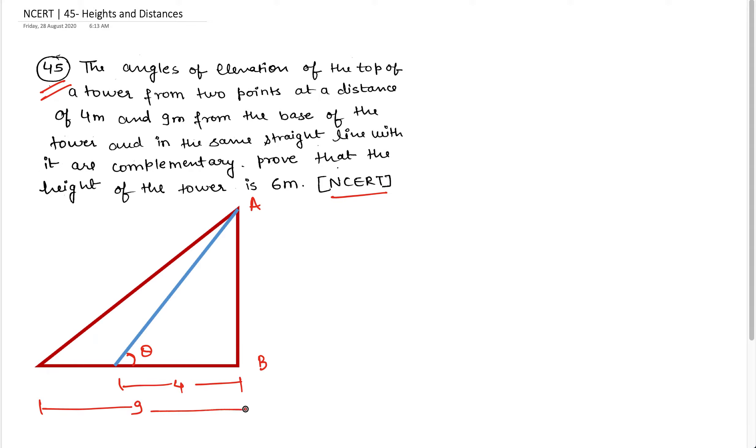Similarly, this distance is 9 meter and this angle is 90 minus theta. The angle of elevation of the top of the tower from two points, these two points are point C and point D, which are 4 meter and 9 meter away. The angle of elevation is complementary, so if this is theta then this is 90 minus theta.